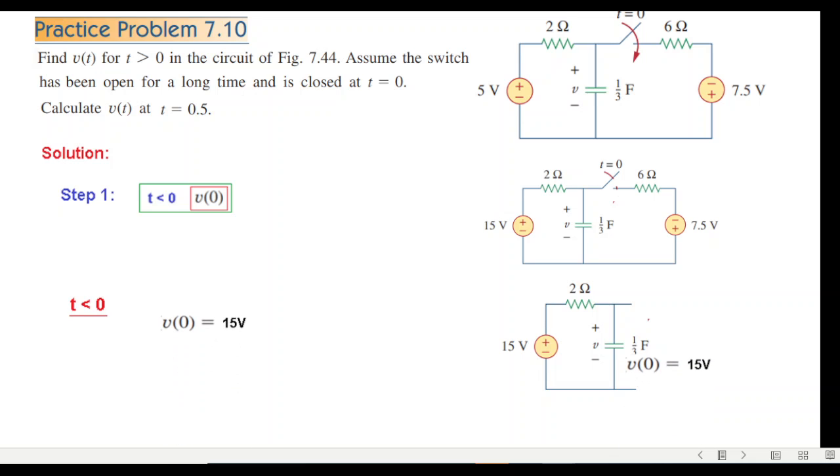Therefore we can say that v(0) is 15 volts. So v(0) = 15V, that is our first answer.